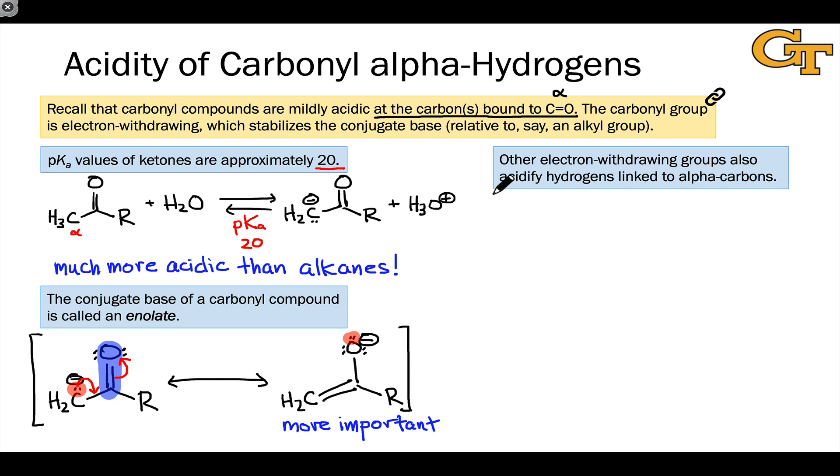Before we leave this slide, it's worth noting that other electron withdrawing groups also acidify the carbons that they're linked to through a very similar effect. And so I want to show this in general for a generic electron withdrawing group. Let's recall the general structure of an electron withdrawing group. All electron withdrawing groups consist of a polarized pi bond, either double or triple, between two atoms of very different electronegativity.